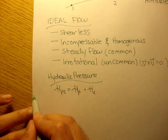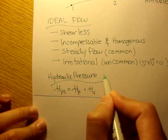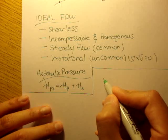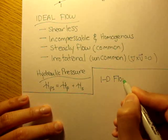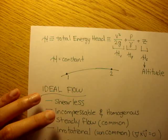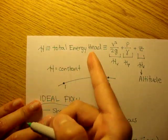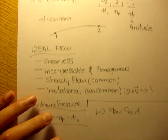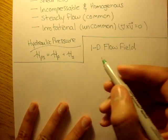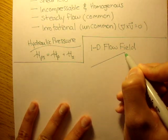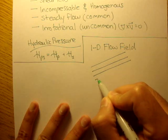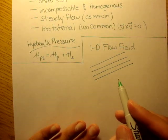Let's draw a line. Let's look at a one dimensional flow field. Let's see when we can use Bernoulli's equation, when we can use this total energy head. Say we had some kind of a one dimensional flow, so everything's flowing in just one direction.